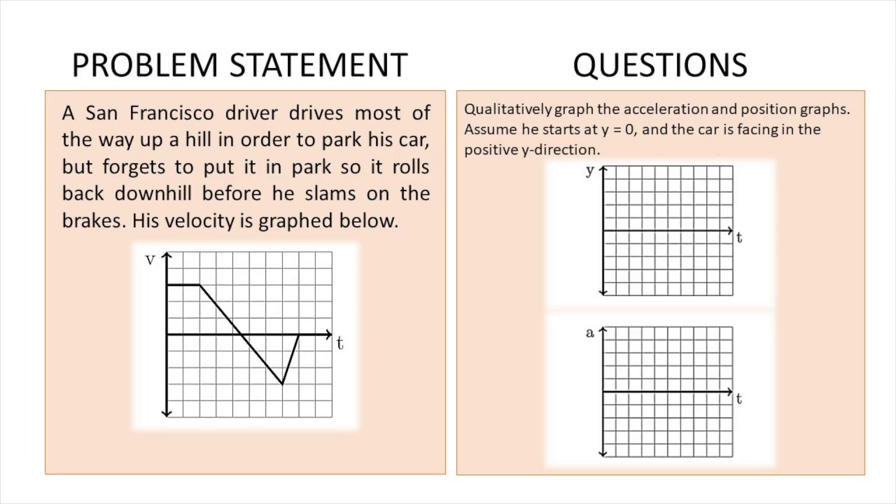So today's problem is, a San Francisco driver drives most of the way up a hill in order to park his car but forgets to put it in park so it rolls back downhill before he slams on the brakes. His velocity is graphed below. And our instructions are to graph the acceleration and position graphs as best as we can. Assume the car starts at y equals 0 and the car is facing in the positive y direction.